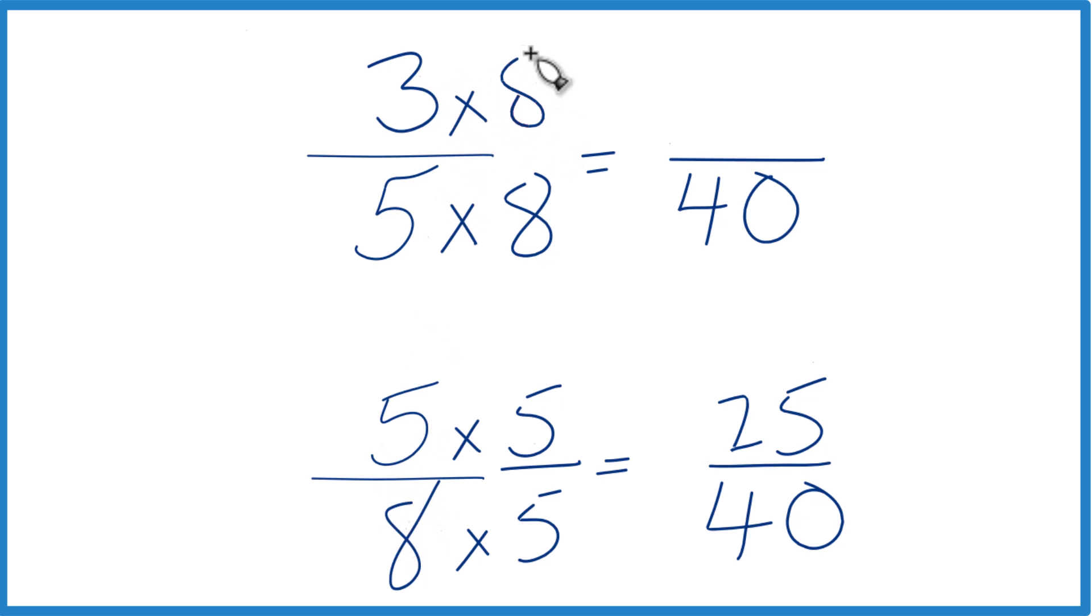Up here let's multiply by 8, because 3 times 8 is 24. Now we have the same denominators. We're going to compare the numerators.